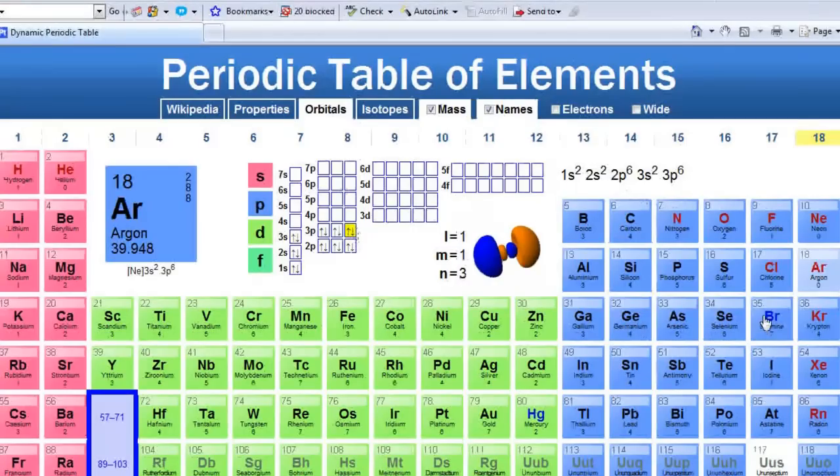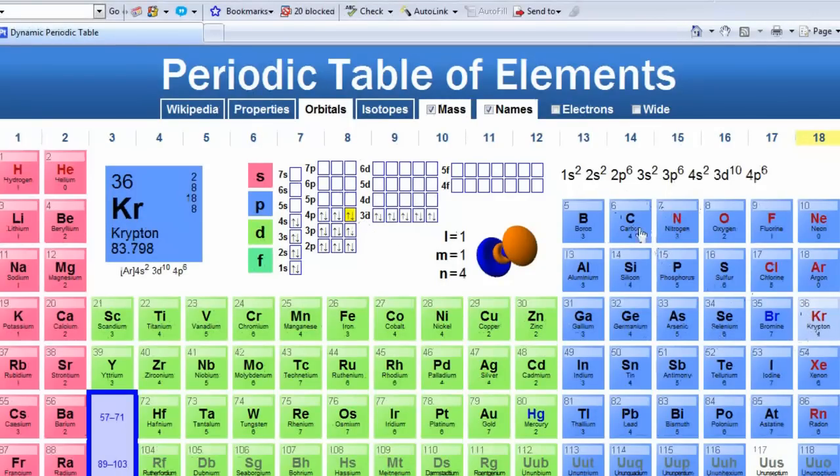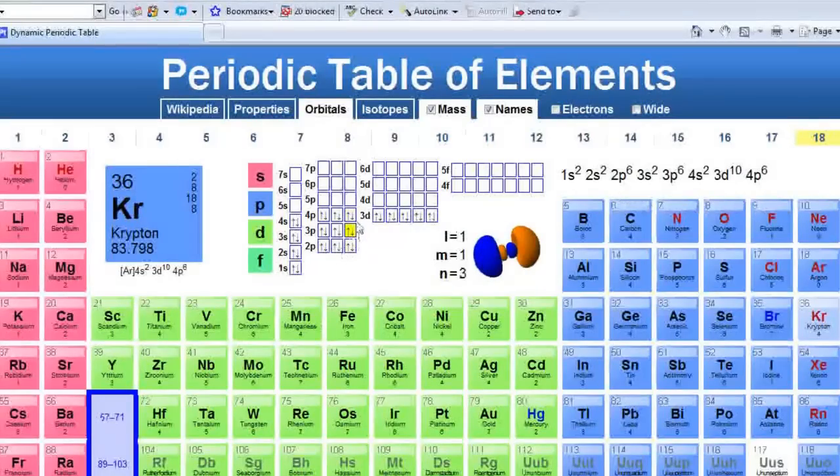Bromine. There's the electron configuration for bromine. When it picks up an electron, it forms bromide and it has the electron configuration of krypton. And then we picked up the extra electron to fill that 4p subshell.